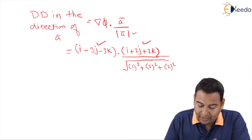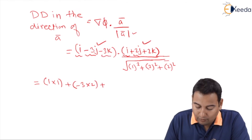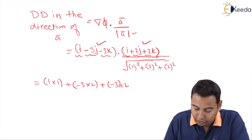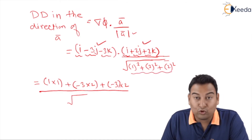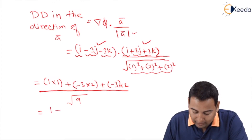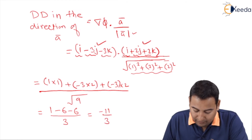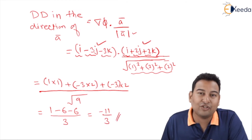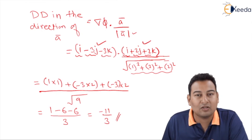Taking the dot product in the numerator: (1)(1) + (−3)(2) + (−3)(2) = 1 − 6 − 6 = −11. The denominator: √(1 + 4 + 4) = √9 = 3. Therefore the directional derivative equals −11/3. This is the directional derivative in the direction of vector i + 2j + 2k. Hope you understood the problem — in the next videos we'll discuss a few more examples of directional derivatives. Thank you.